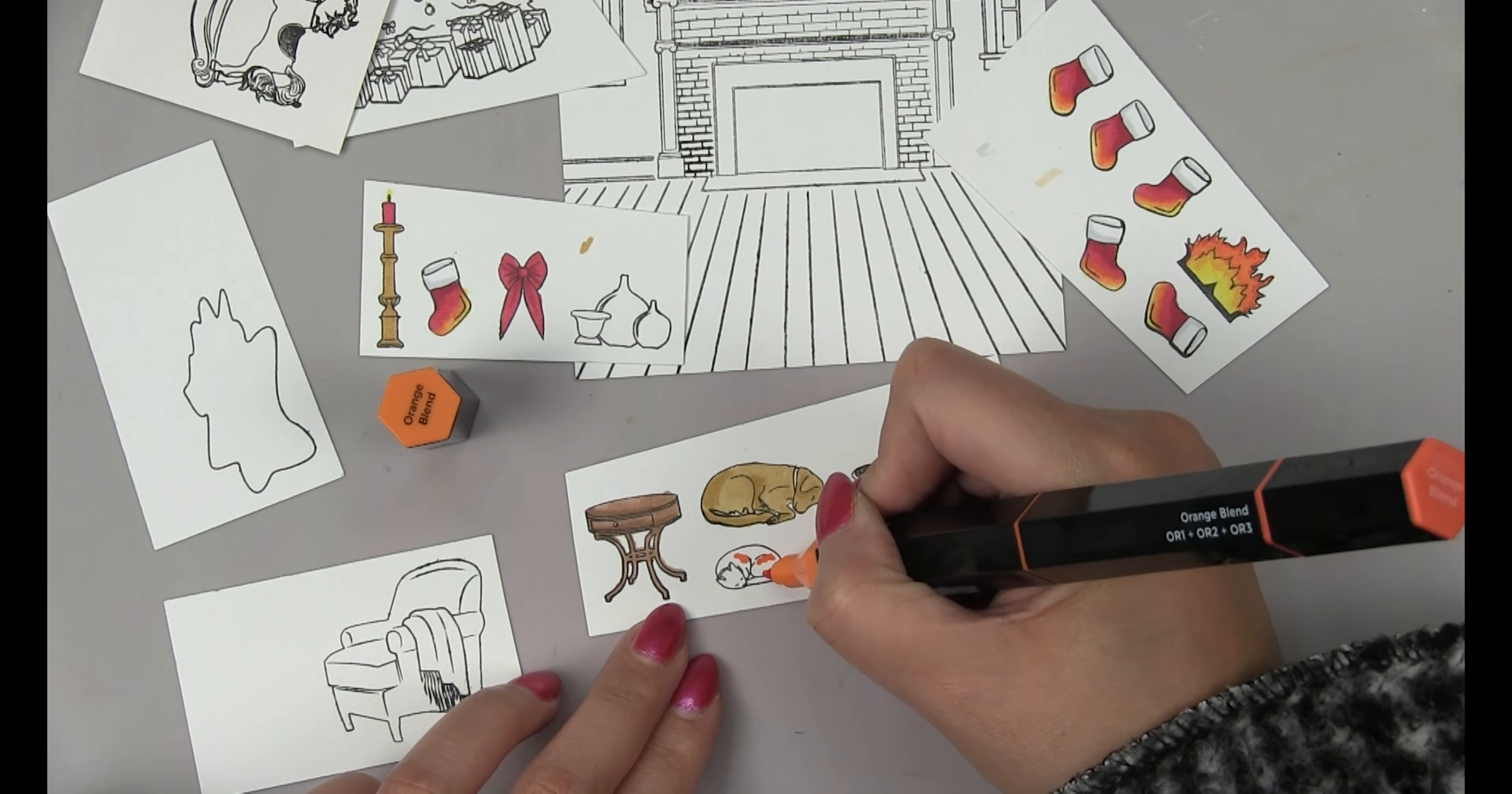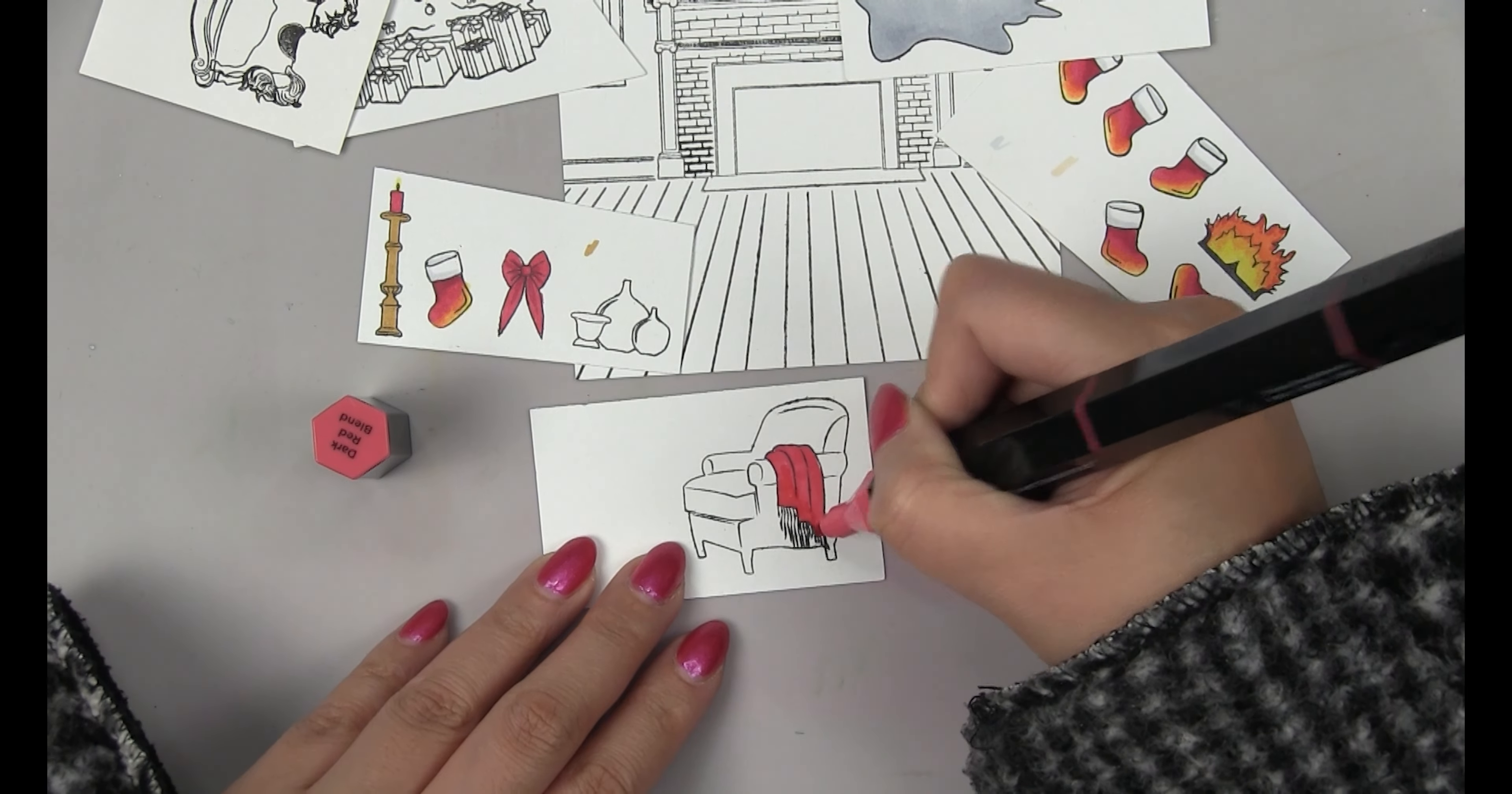Then I did some really easy simple coloring for the rug. I just used the light gray and then darker gray along the bottom edge of the rug and then blended it in with the light gray. Then for the armchair I used light red for the blanket and then added shading with the darker red marker.